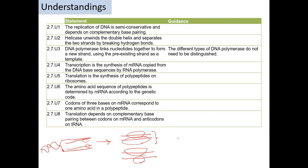So you get a DNA where half is old and half is new — old and new. That is why it is called semi-conservative. The next thing to remember is the functions of key enzymes. Helicase is the enzyme responsible for unwinding the DNA.